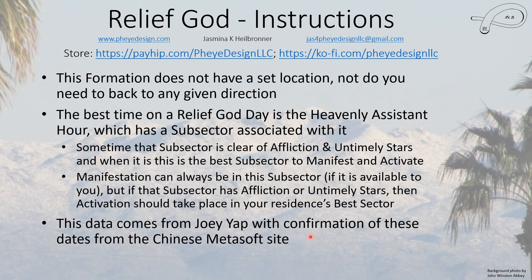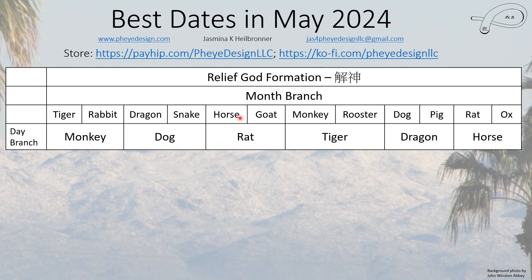The rules for the dates come from Joey Yap and are confirmed with the dates from the Chinese Metasoft site. So this is a standard type of formation that is available. You find the month in normal order — tiger, rabbit, and so forth, ending in ox — starting with the Chinese solar new year, which is always the tiger month. This is the day branch: any monkey day in the tiger or rabbit month has the relief guide formation. For either a dragon or a snake month, any dog day has a relief guide formation.